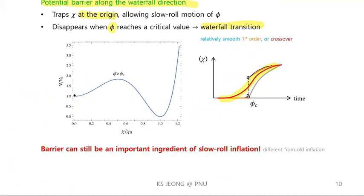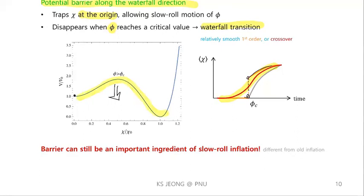The barrier disappears soon, so the bubbles cannot expand much — in that sense the transition is relatively smooth. There is a barrier along the waterfall direction, and it shrinks as the inflaton evolves. This is the main idea of our inflation scenario.